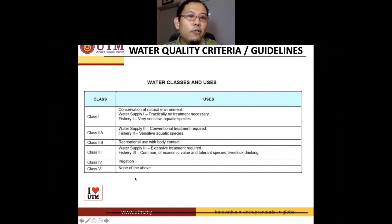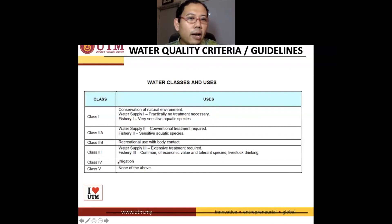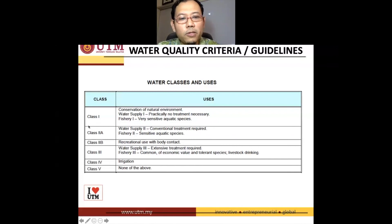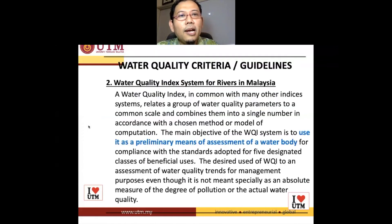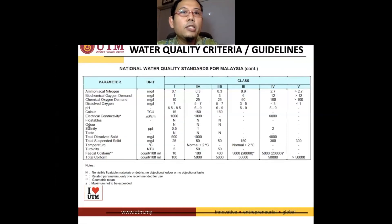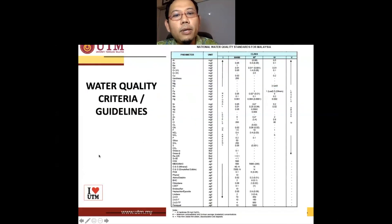Class five rivers cannot be used for farming, water supply, or recreational purposes. We simply have to treat a class five river until it improves to class four, class three, and eventually class one if possible. That is the first part — classifying rivers through NWQS. You have to refer to this table; this is the latest 2019 version.